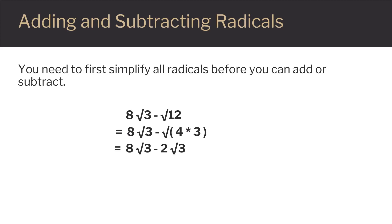Here's another example. We have 8 square root of 3 minus the square root of 12. Right now they don't have the same radicand, so we can't just combine the coefficients. Notice that the square root of 12 is not in simplified form. We could write 12 as the product of 4 times 3. Notice that 4 is a perfect square. If you can find a factor of a number that's a perfect square, you can then take the square root of it and move it out of the radical.